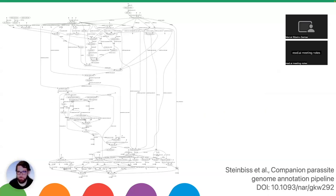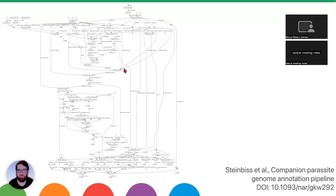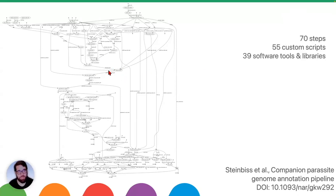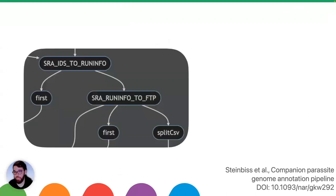Here's an example of a bioinformatics pipeline — we call this drawing a DAG, a directed acyclic graph. Nodes are the circles and oriented arrows show the flow of information. This specific pipeline has 70 steps and over 50 custom scripts. Each step can have multiple inputs producing outputs that feed into multiple other steps, making this very complicated.